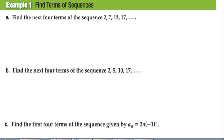Find the next four terms of the sequence. We just have to find a pattern. In this case, we add 5 every time. So the next four terms are 22, 27, 32, and 37. This happens to be arithmetic because we are adding 5 every time.